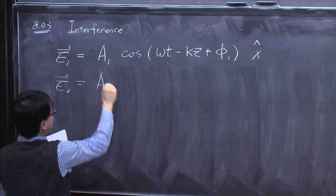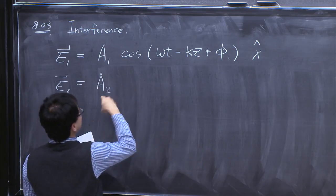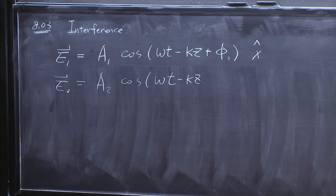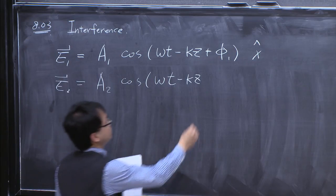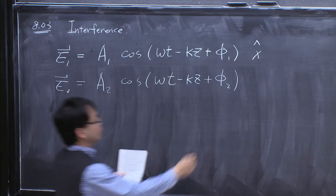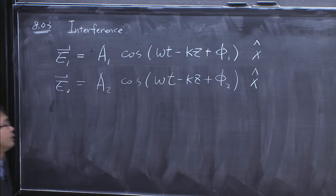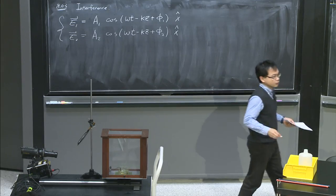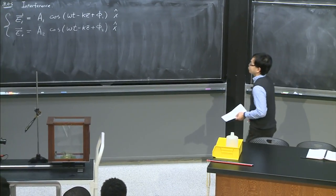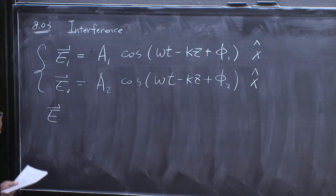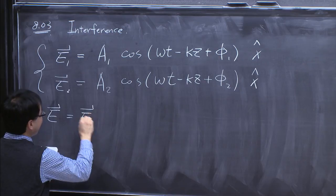This electric field propagates at angular frequency ω with wave number k going toward the positive z-direction. The electric field is perpendicular to the direction of propagation, in the x-direction, and has a phase of φ₁. I can also define a second electric field E2 = A2 cosine(ωt − kz + φ₂), with the same wavelength and angular frequency but a different phase, also pointing in the x-direction. The total electric field E is E1 plus E2.